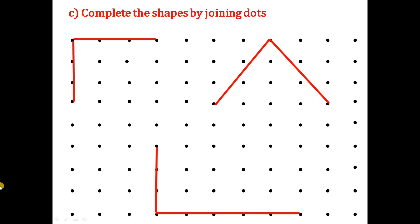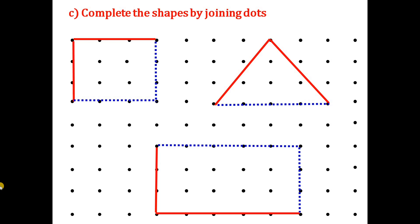Next question: complete the shapes by joining dots. These are some incomplete shapes — we have to complete them by joining the dots. This picture is complete, this one is also complete, and this one is also completed. There are three shapes here. The name of the first picture is square, the second is triangle, and the third is rectangle.